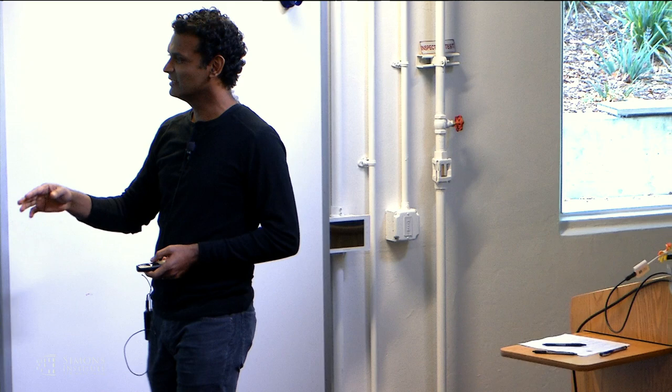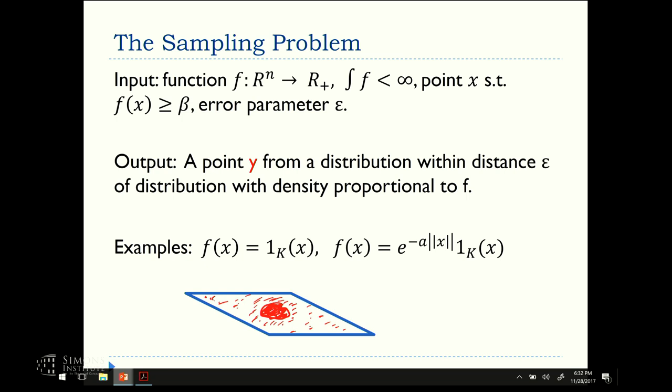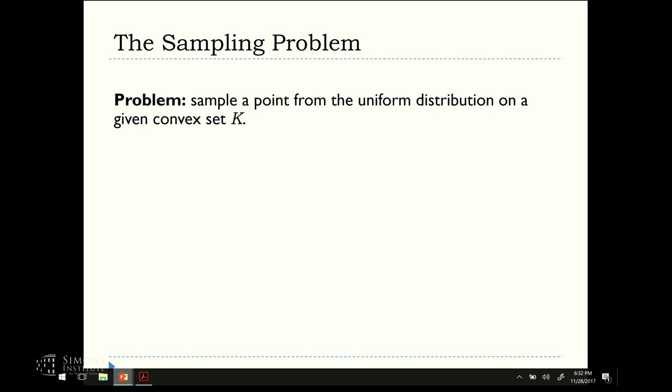So this has many guises and special cases of interest, such as sampling from a convex body, or some density restricted to a body. One case that may be prototypical to keep in mind is sampling a point from the uniform distribution on a given convex set. The set is given by an oracle, so you can ask in or out and you have a starting point in the set. Alternatively, it's explicit, it's just a polytope. This talk will mostly focus on the second setting.